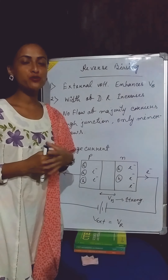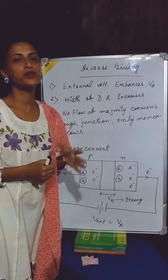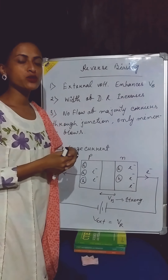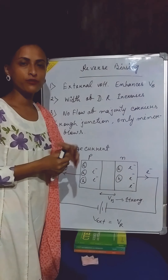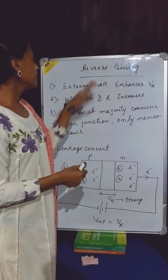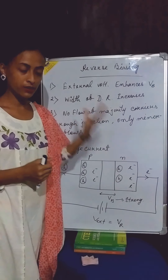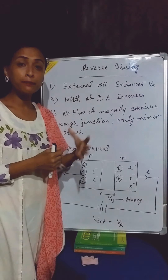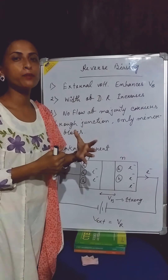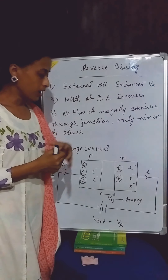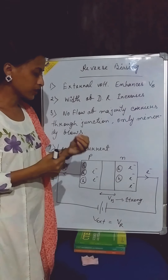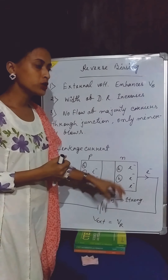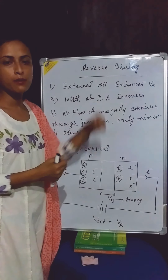Hello everyone, welcome back to my channel Harmony of Physics with Music. Today in this video I am going to discuss about the reverse biasing process of a PN junction diode. Now, what is exactly reverse biasing? In the reverse biasing process, the connection of a PN junction diode is completely opposite to the forward biasing connection. So let's see first the connection of a PN diode with respect to an external voltage which can give us reverse biasing.